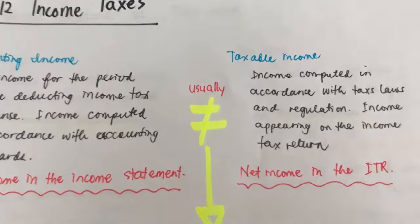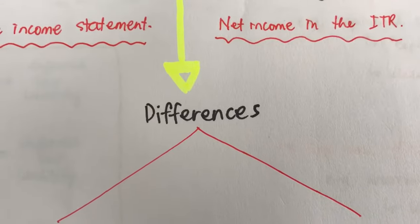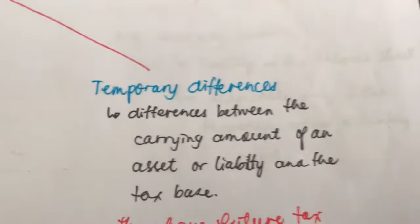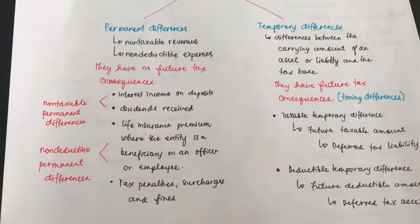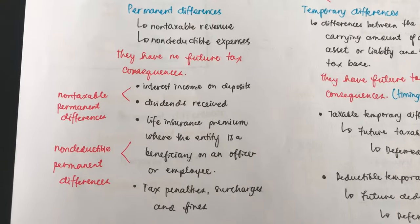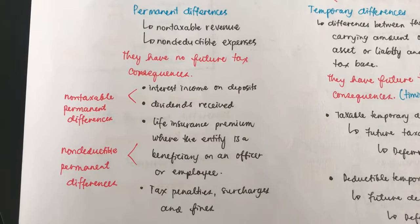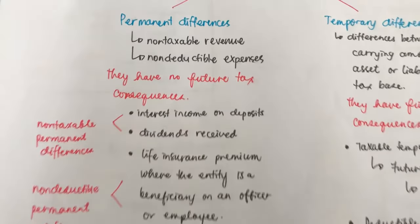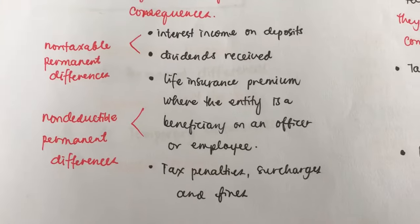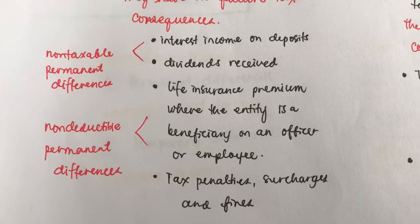Since accounting income and taxable income are usually not equal, we have what we call differences. There are two kinds: permanent differences and temporary differences. Permanent differences are non-taxable revenues or non-deductible expenses — revenues that are truly not subject to tax, or expenses that cannot be deducted for tax purposes. They have no future tax consequences.